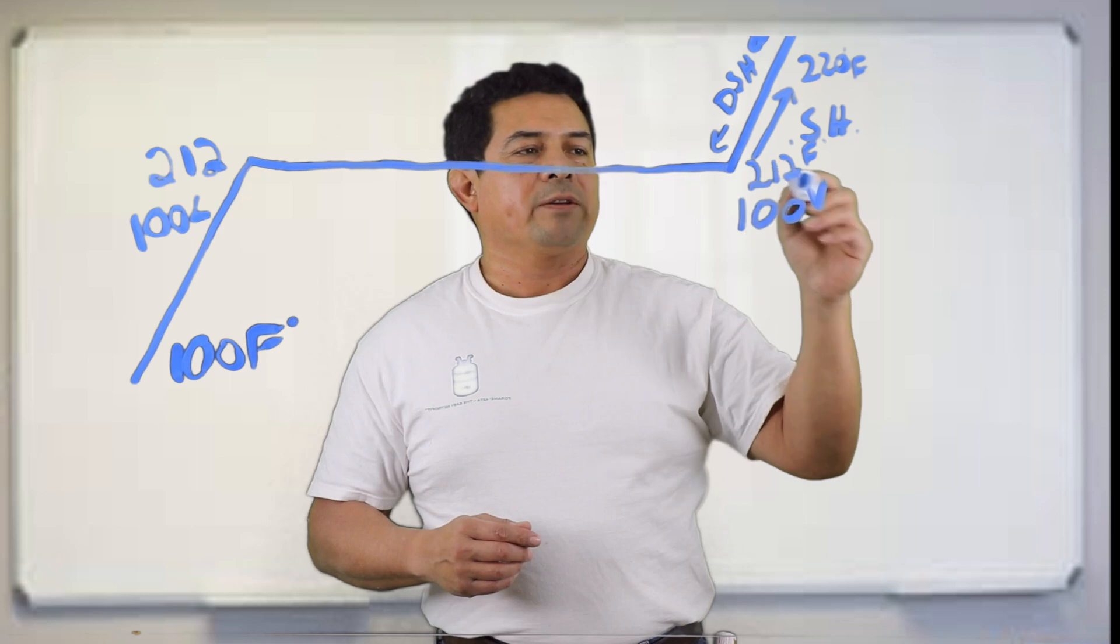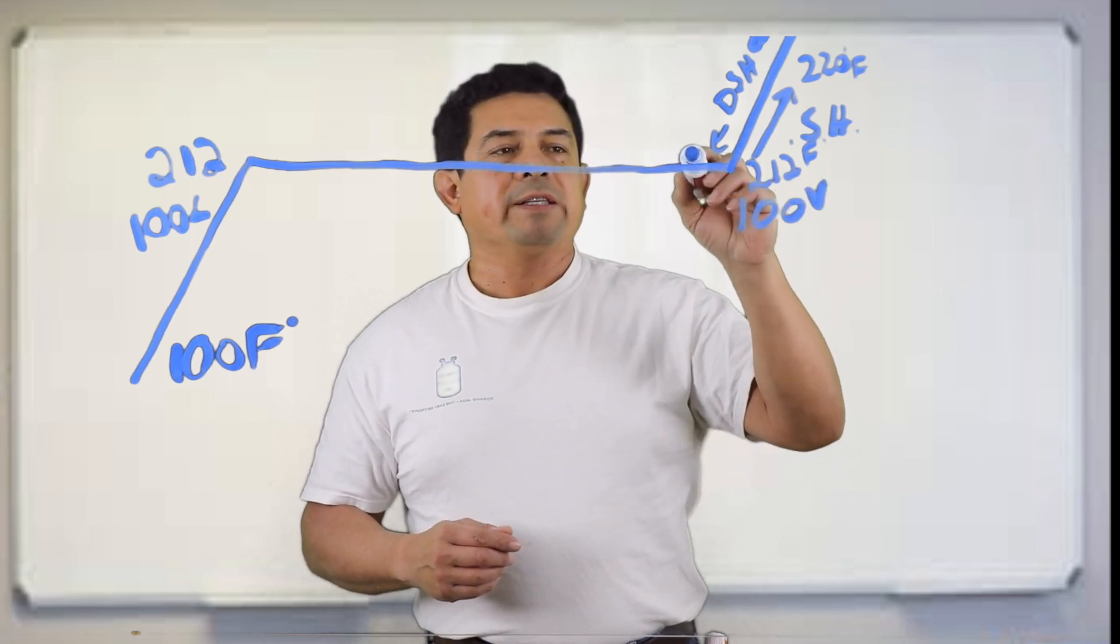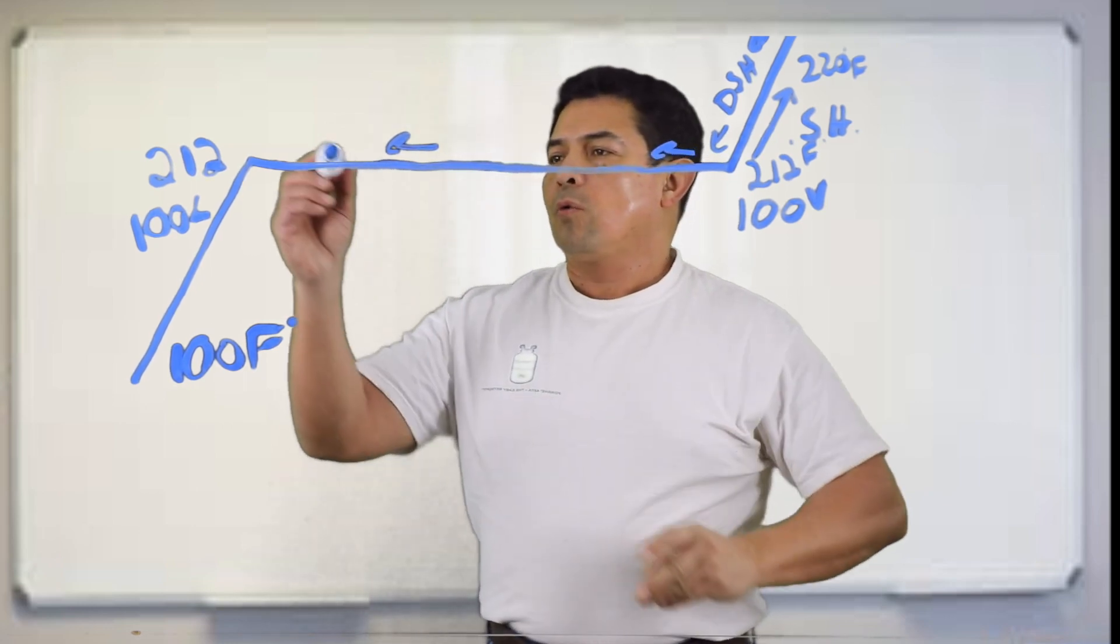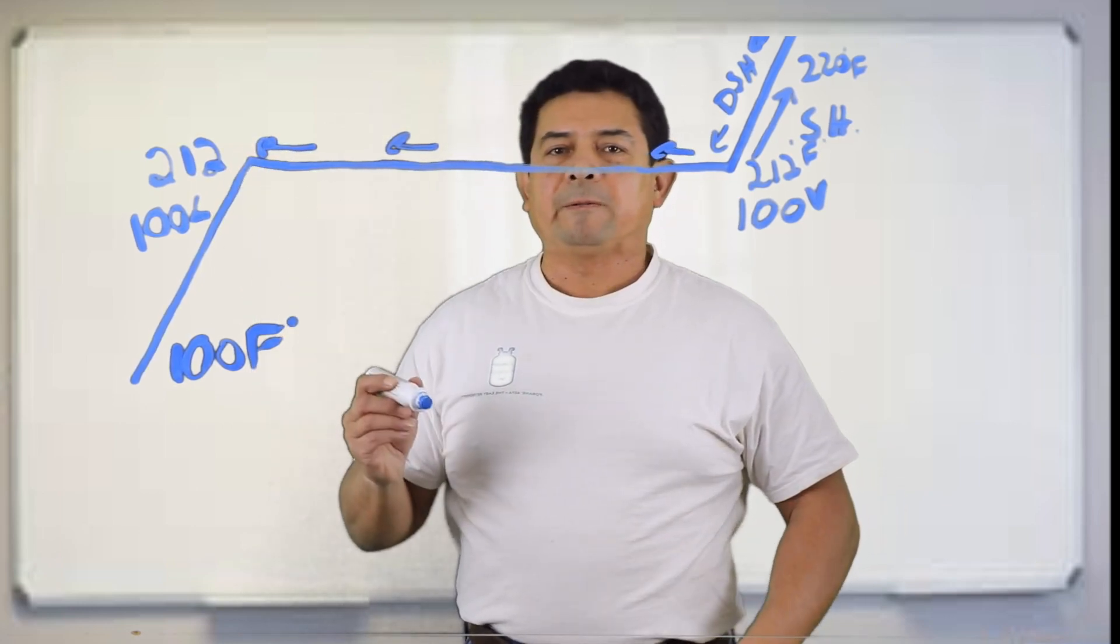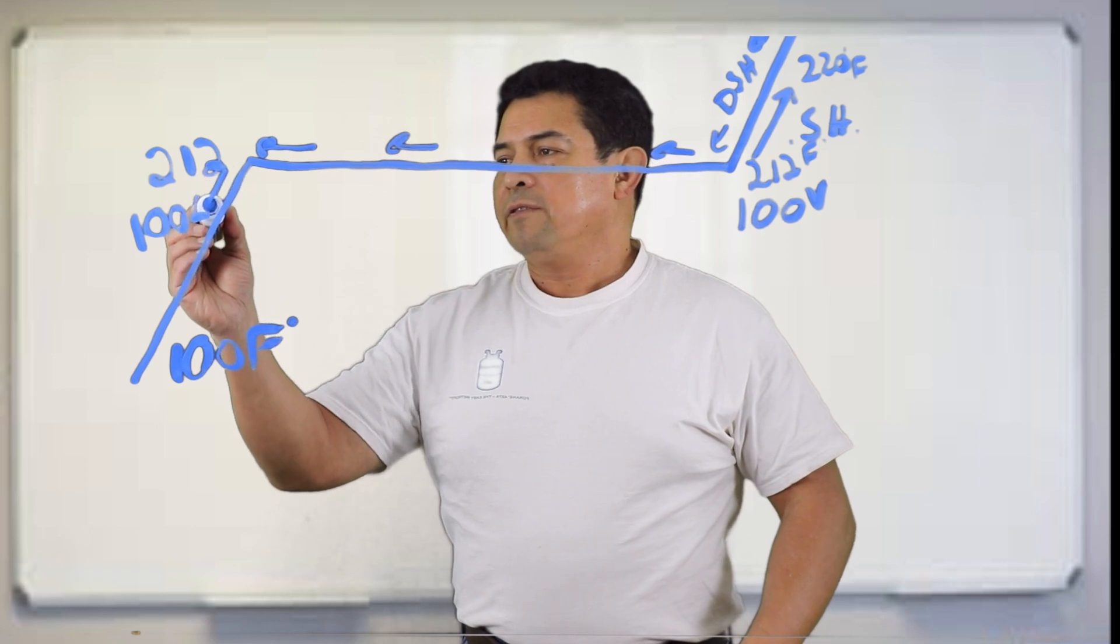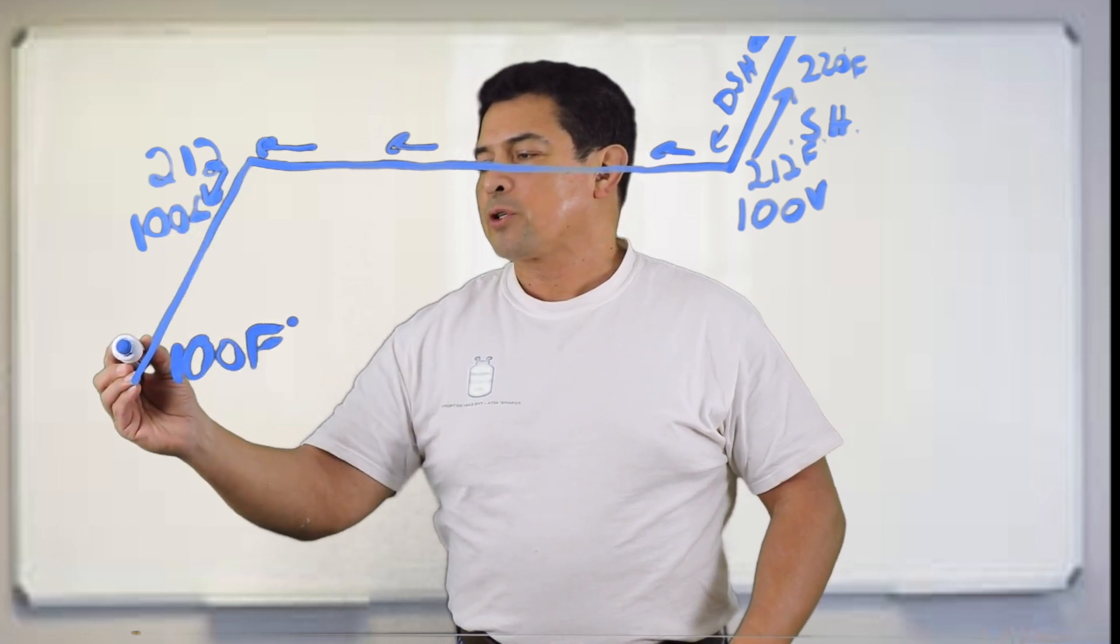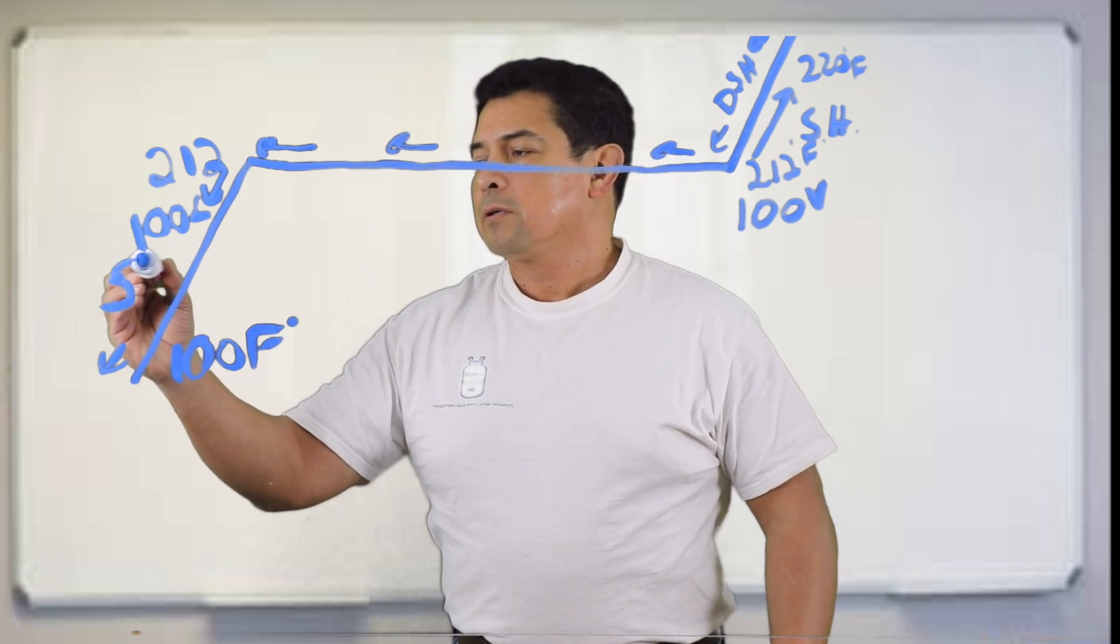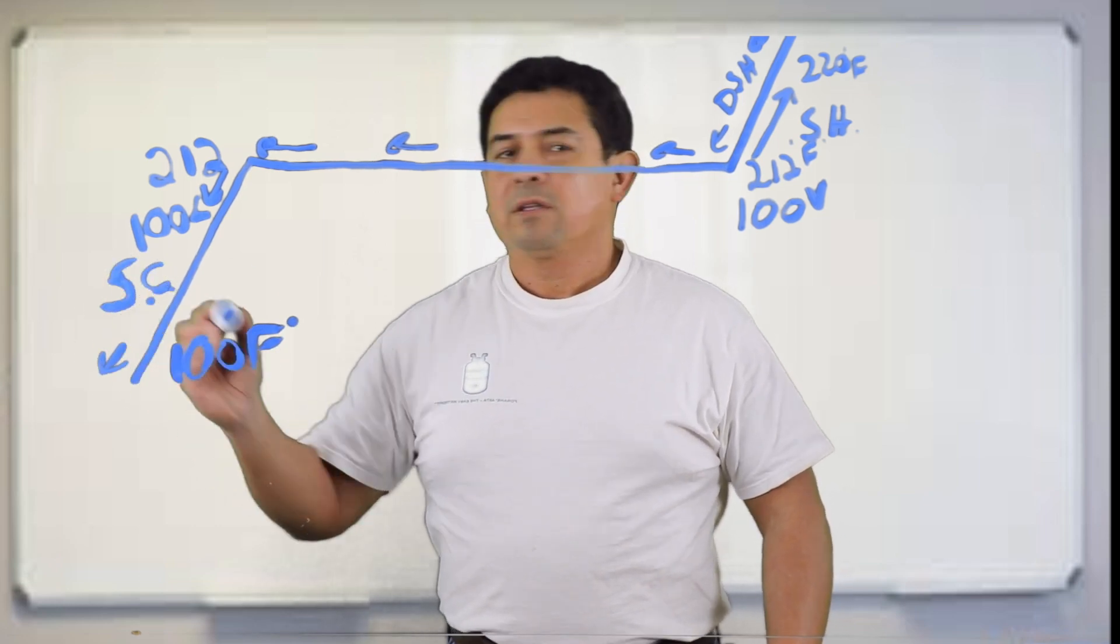Once we get down to 212 degrees, we start to condense. We start to turn this into 100% liquid. Again, if we lower the temperature some more, then we are subcooling the liquid.